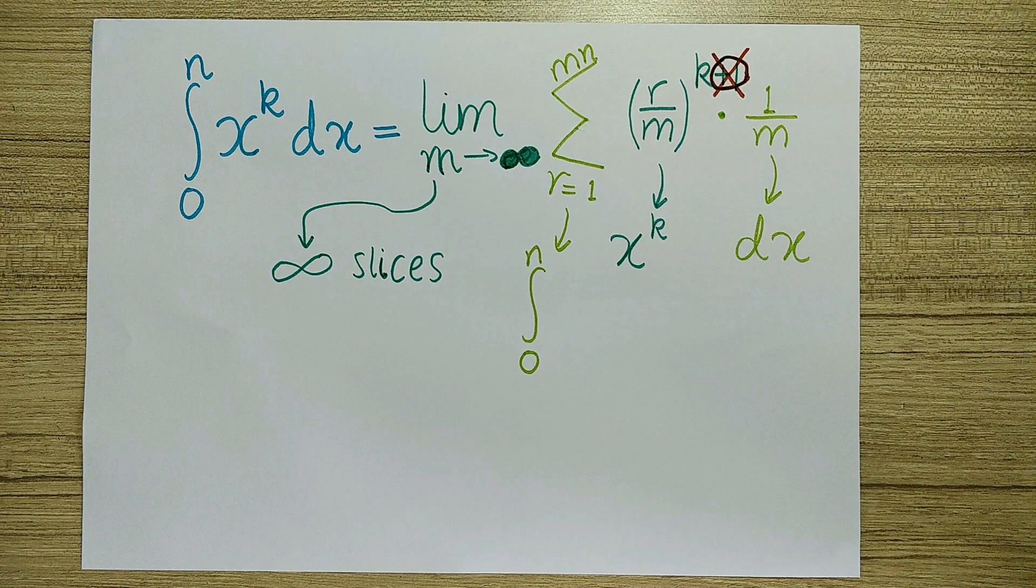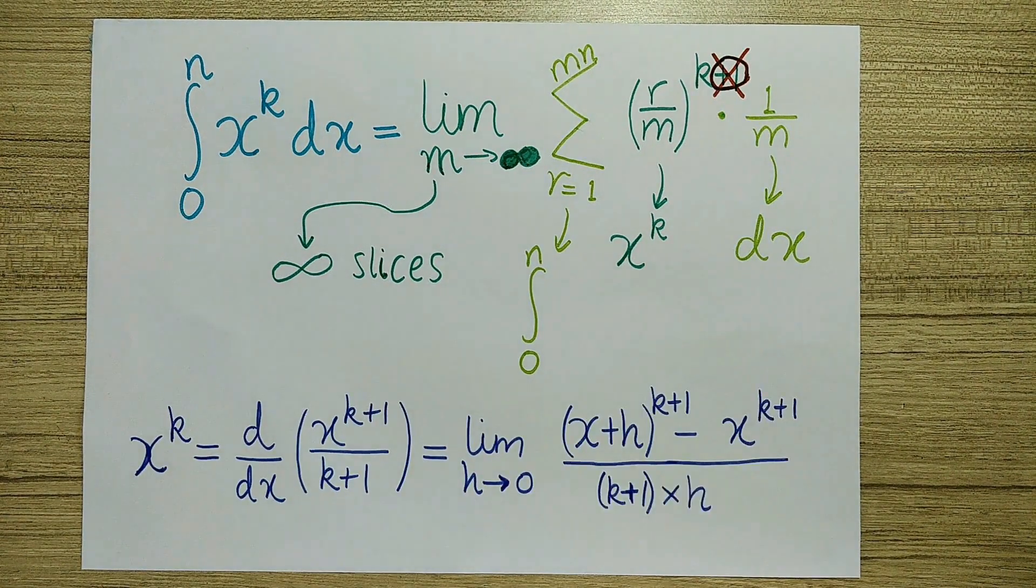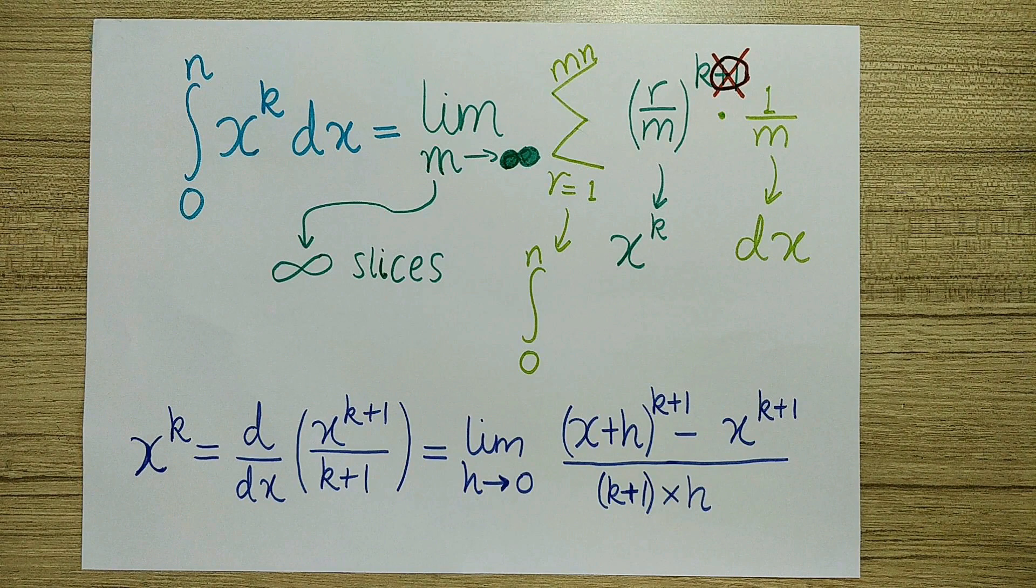Evaluating this sum is where the anti-differentiation part of integration comes in. x to the k is just the derivative of x to the k plus 1 over k plus 1, and we can write that using the first principle as follows.